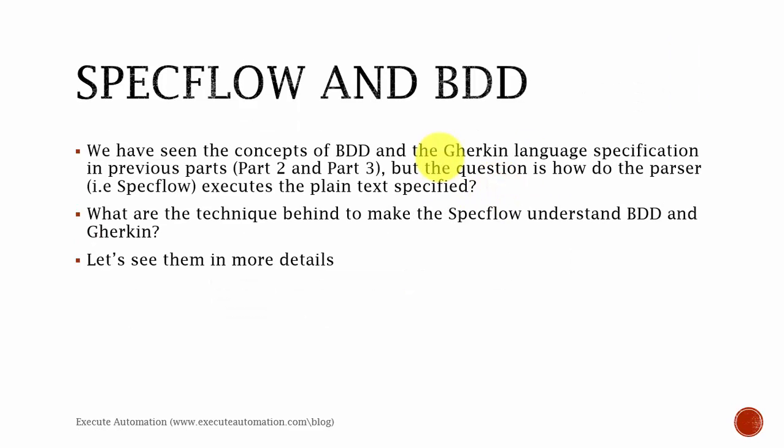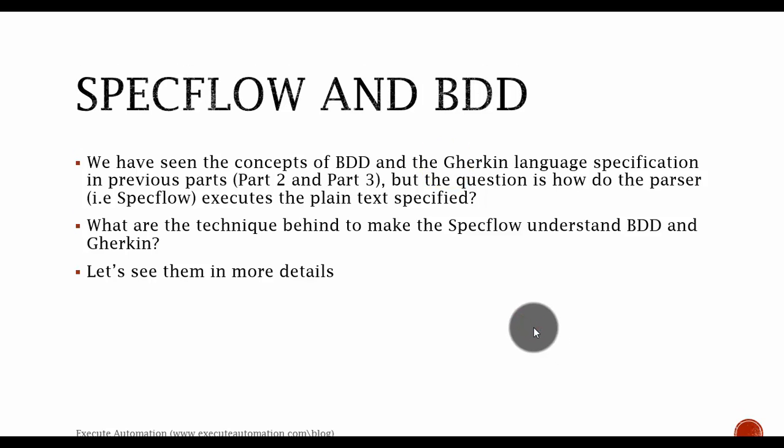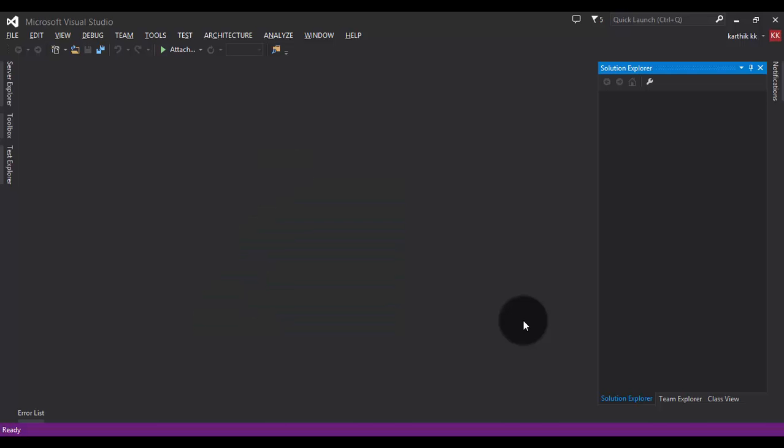We have seen the concepts of BDD and Gherkin language specification in the previous parts. But the question is: how does the parser — that is, SpecFlow — execute the plain text specified? That was the question from the previous parts, and now we're going to see that. In order to understand how the parser executes the plain text specified in Gherkin, we'll first install SpecFlow in Visual Studio and see practically how things work.